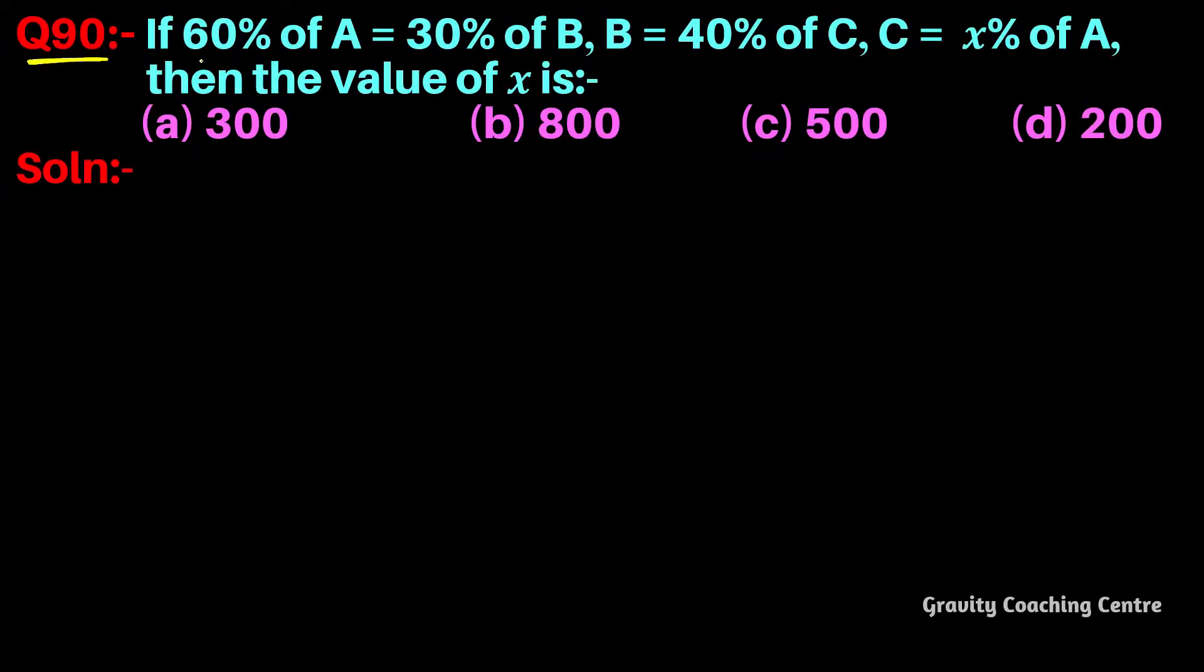Question number 90: If 60 percent of A equals 30 percent of B, B equals 40 percent of C, C equals x percent of A, then the value of x. So this is given: 60 percent of A.